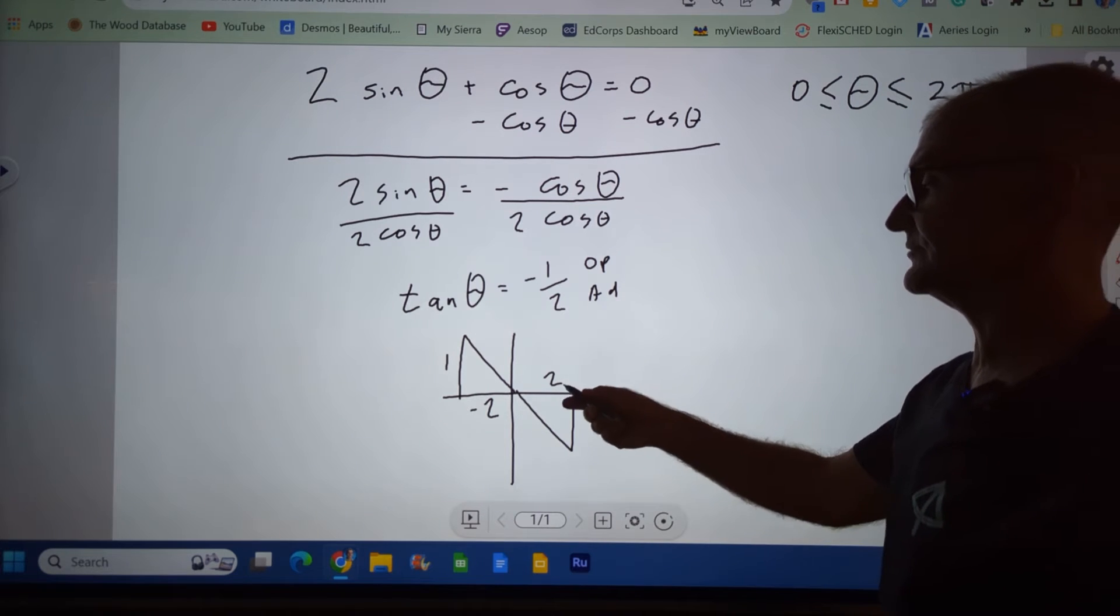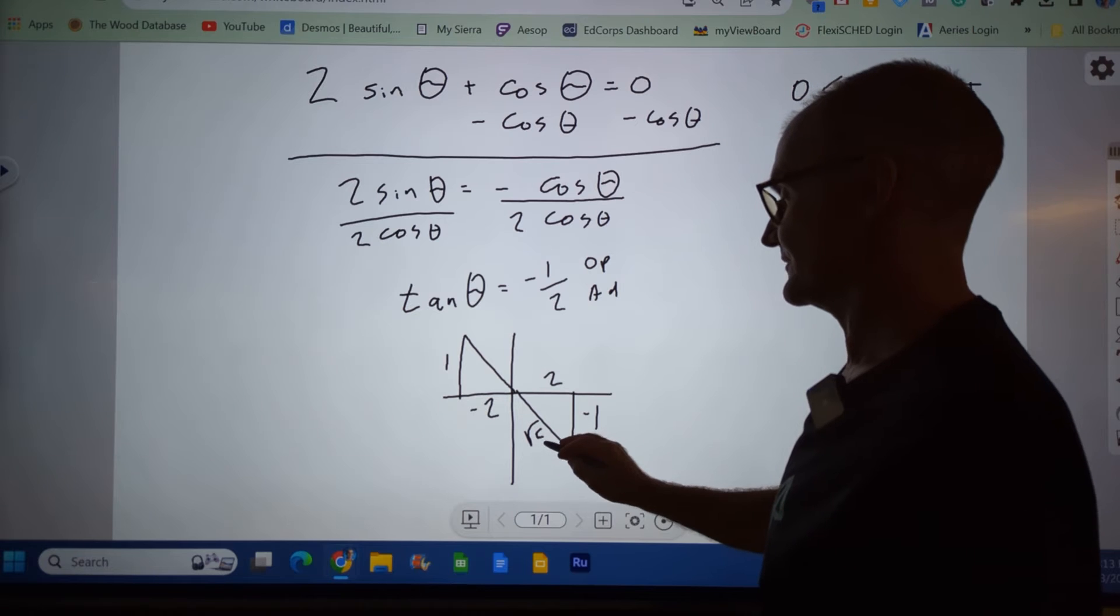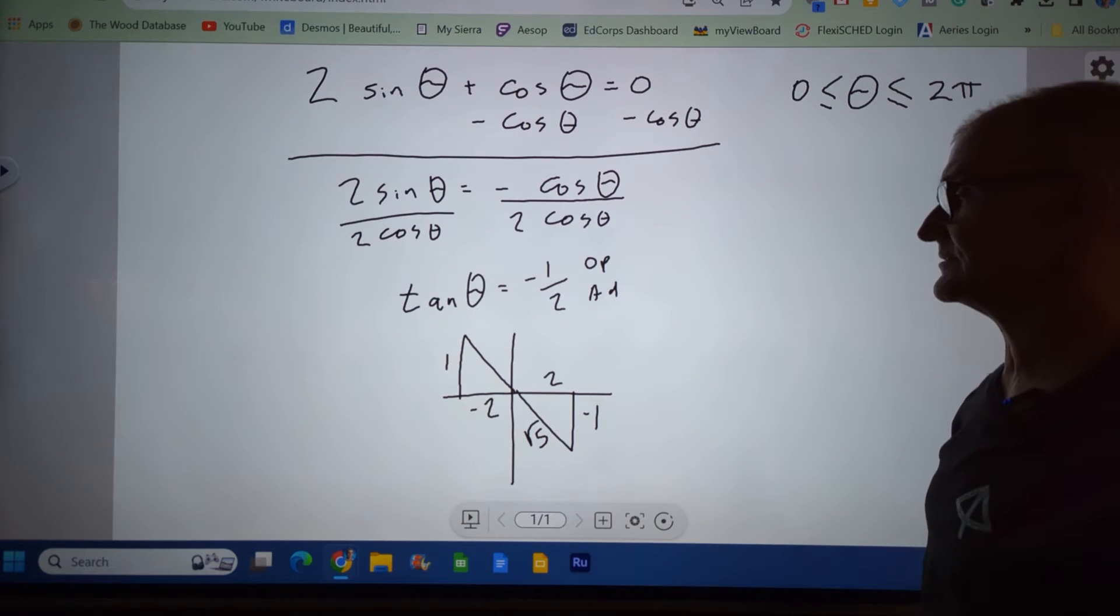Use the Pythagorean theorem. 2 squared plus 1 squared is root 5. So it's not one of the triangles I know, so I'm going to have to use the calculator to solve that.